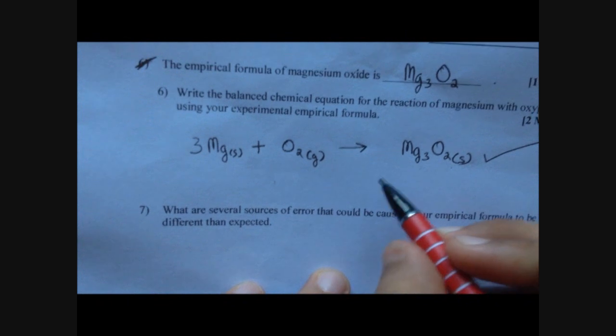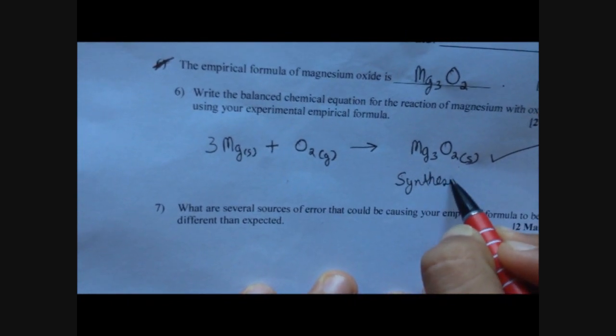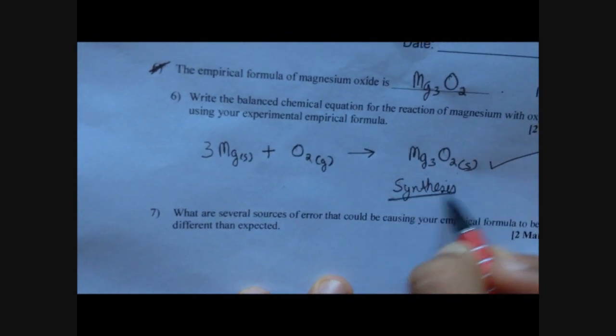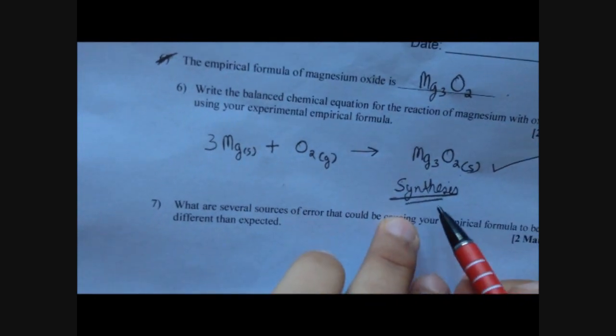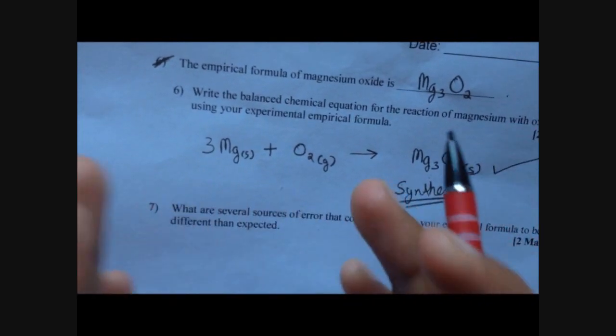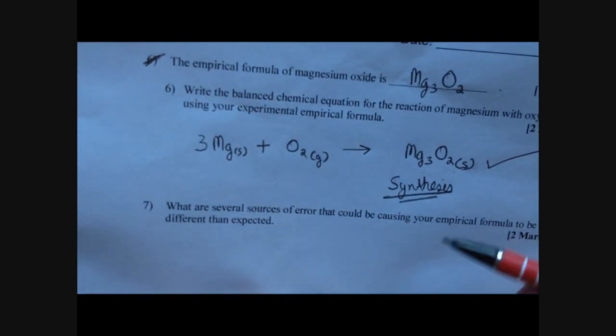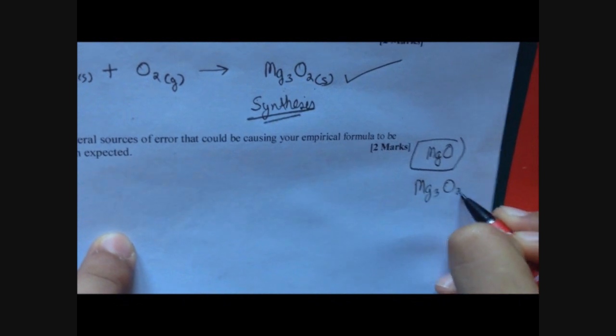The reaction type for this is synthesis — they don't ask for it, but it's for your knowledge. This is synthesis because we are combining 2 things into 1. The actual formula of magnesium oxide is MgO, but we got Mg3O2.